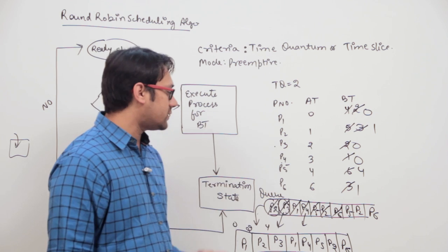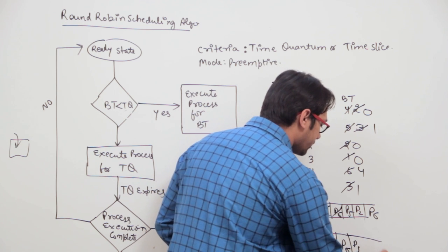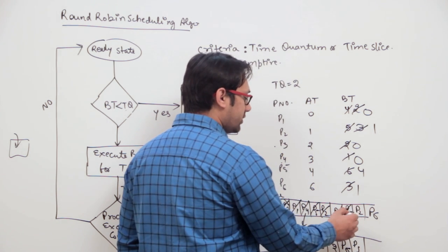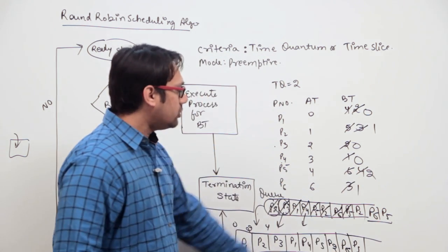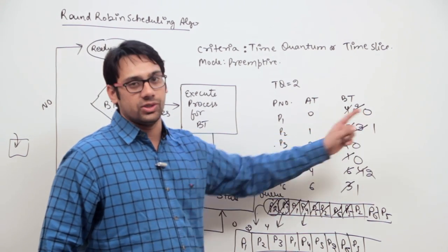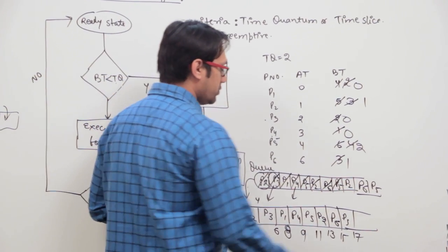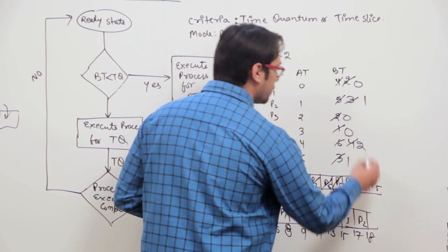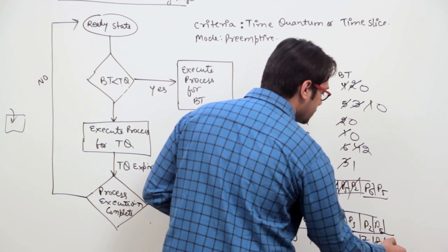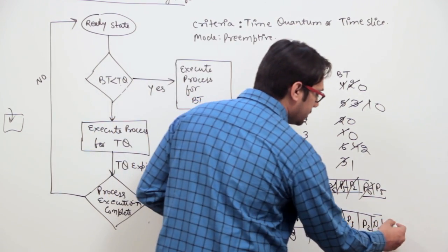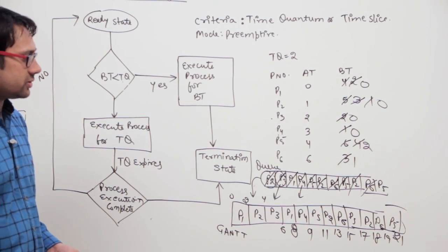The next process is P5 with burst time 4, so we execute it for 2 units until time unit 17. It is not finished, so we put it back in the ready queue. Next, P2 has burst time 1, which is less than the time quantum, so P2 finishes at time 18. Then P6 executes for 1 unit and finishes at time 19. Then P5 executes for 2 units and finishes at time 21.